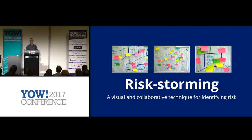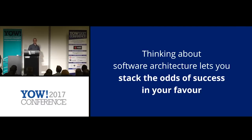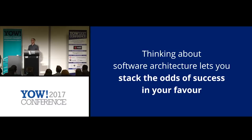So essentially, thinking about architecture lets you stack the odds of success back in your favor. People always ask me how to de-risk their project because they're agile. My answer is: go read the RUP book. We've done this before.